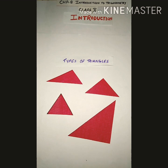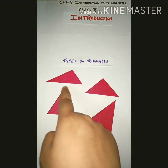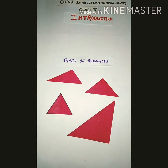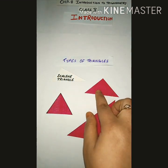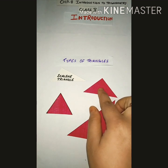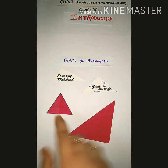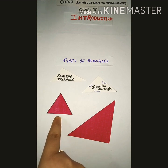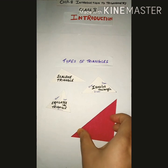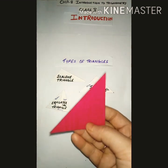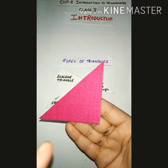Let us start from the basics. This triangle is known as a scalene triangle — because all three sides are not equal. This is an isosceles triangle where two sides are equal. And this triangle is an equilateral triangle because all three sides are equal. And you know this triangle — this is a right angle triangle where one angle is 90 degrees and the other two angles are acute angles, meaning less than 90 degrees.